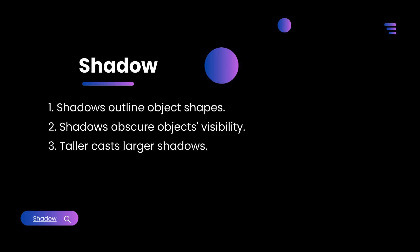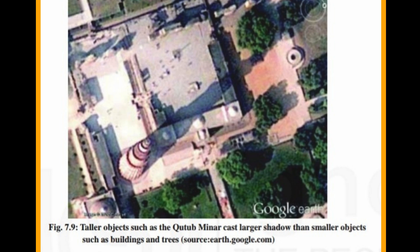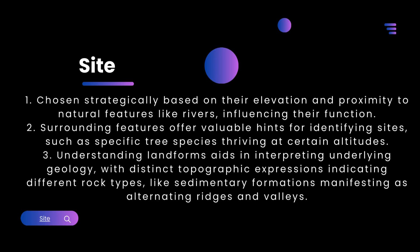Shadow: shadows outline object shapes, but also obscure object visibility. Taller objects cast larger shadows. Site: sites are chosen strategically based on their elevation and proximity to natural features like rivers, influencing their function. Surrounding features offer valuable hints for identifying sites, such as specific tree species thriving at certain altitudes. Understanding landforms aids in interpreting underlying geology, with distinct topographic expressions indicating different rock types, like sedimentary formations manifesting as alternating ridges and valleys.